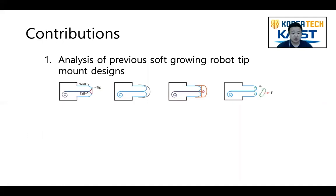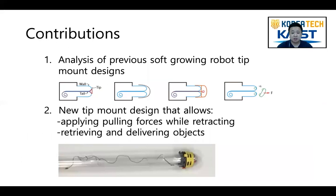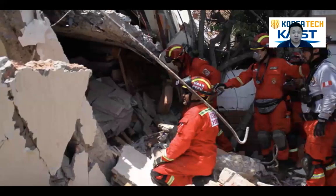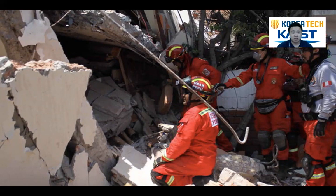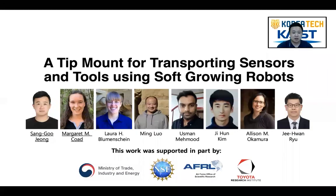In summary, we analyzed previous soft growing robot tip mount designs and found that they have several limitations. We overcame this limitation in a new tip mount design, which for the first time allows soft growing robots to apply pulling force on the environment while retracting and to retrieve and deliver objects. This work improved the usefulness of soft growing robots in highly confined, rubble-filled environments. Soft growing robots could already get into these kinds of spaces, but this work adds robot capabilities that could make them truly useful in helping disaster victims until they can be fully rescued. Thank you to all our co-authors and funding sources, and thank you for watching.